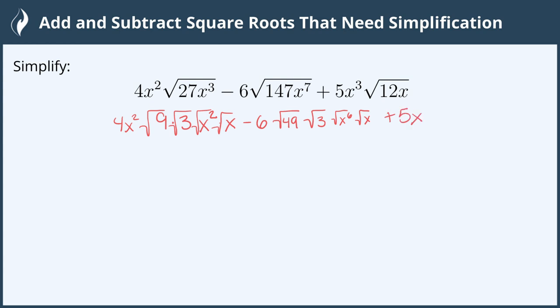And the last one we have 5x³ out front. 12 can be rewritten as 4 times 3 so we have the square root of 4 times the square root of 3 and the square root of x does not simplify so it stays in the radical.